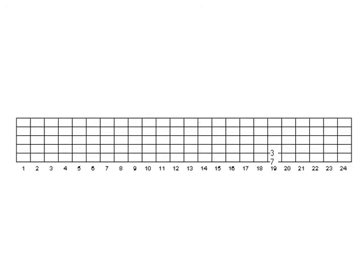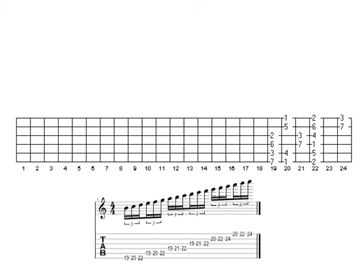Finally, three-note-per-string pattern seven, starting on the seventh of the scale — in this case B, 19th fret. This entire pattern is perfect fourth shapes. Here's the scale degree information, the notes, and going from pattern six to pattern seven, this is all you needed to learn.